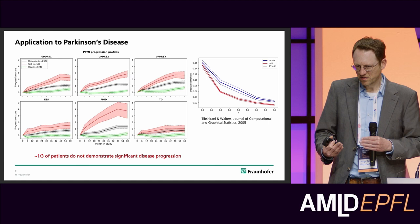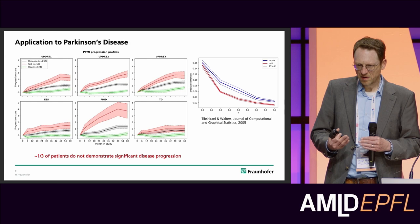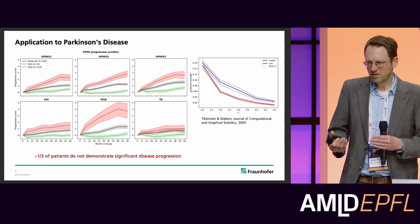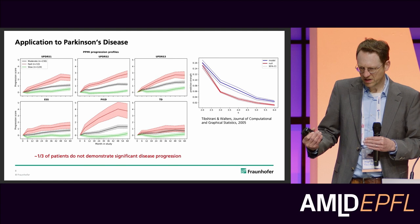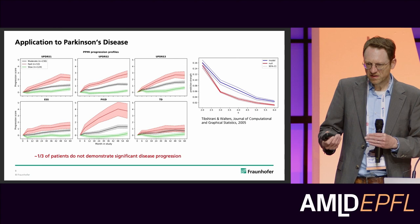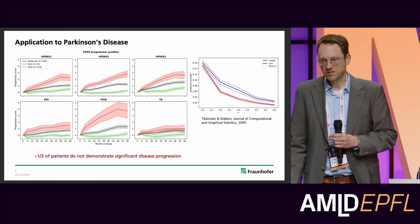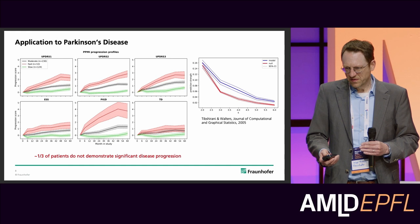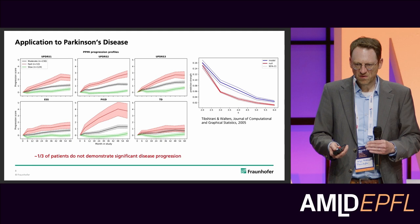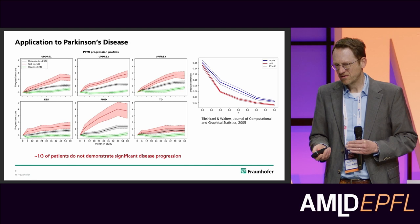An interesting aspect is that we find three different trajectories, which are visible along five of the six outcome measures but not across the third one — there are three more dominant groups. This can perfectly make sense, since clusters are not necessarily expected to discriminate all outcome measures. Notably, according to this model, about one-third of patients do not demonstrate significant disease progression.